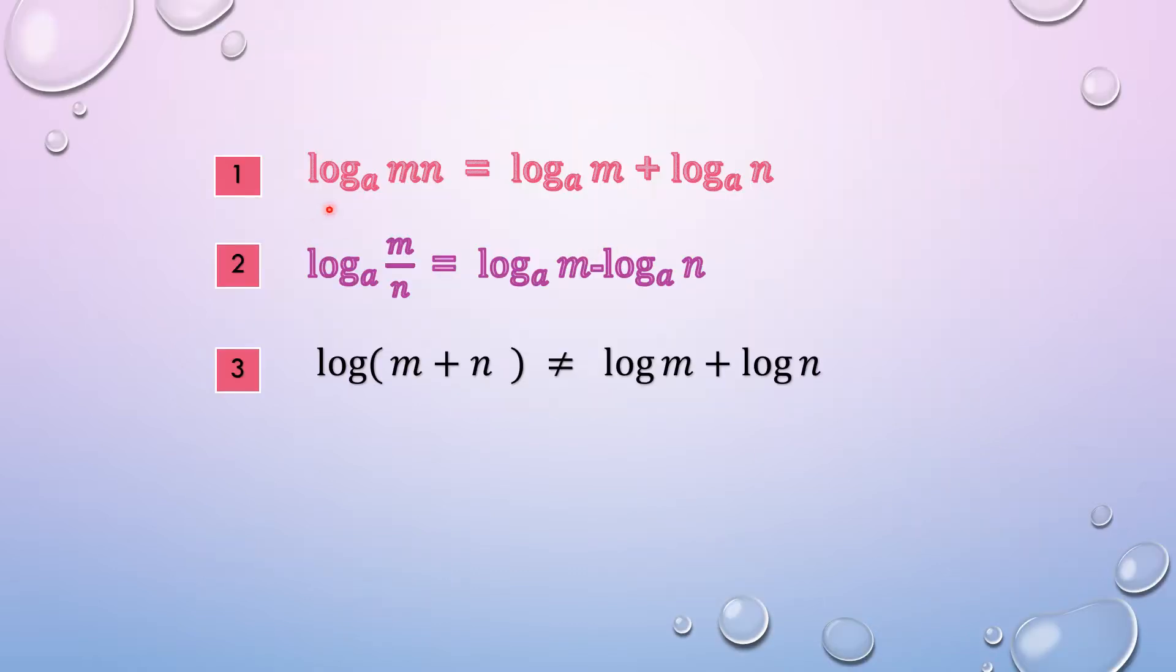The first one says log of m multiplied by n to the base a is equal to log of m to the base a plus log of n to the base a.